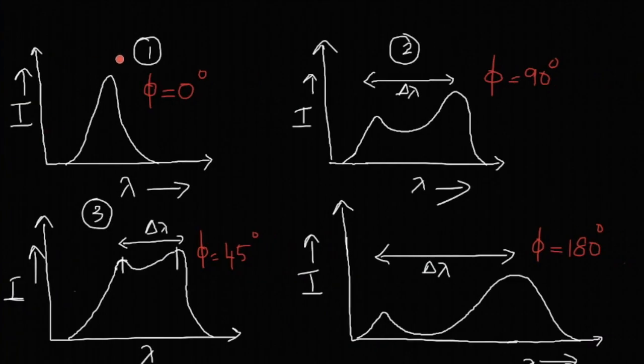This is how the experimental graphs look like: intensity versus lambda for different angles. For phi equal to 0 degrees, we don't have another peak; lambda prime equals lambda as we obtained beforehand. For phi equal to 90 degrees, you can see there is a small shift here; delta lambda is the change in wavelength. For 180 degrees, we got it to be 2 lambda c, so it's more in 180 degrees.